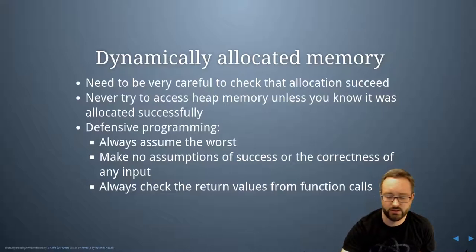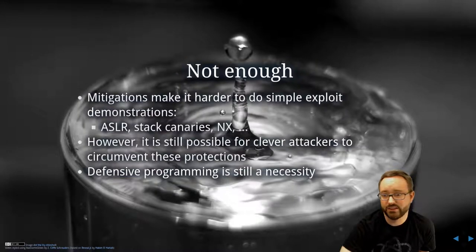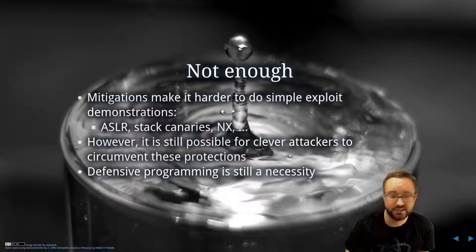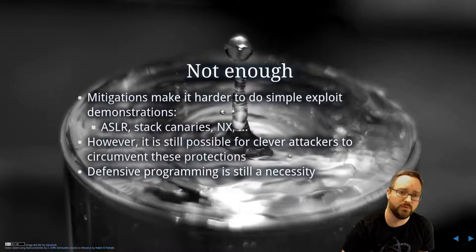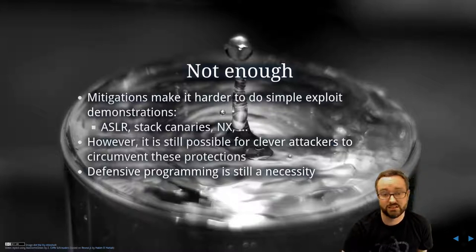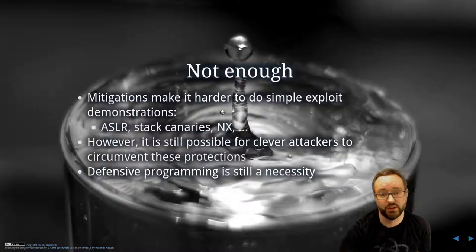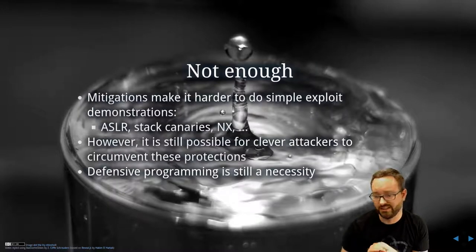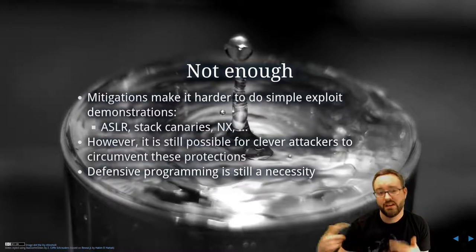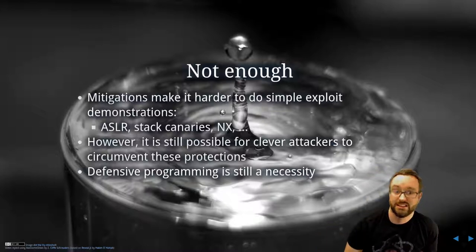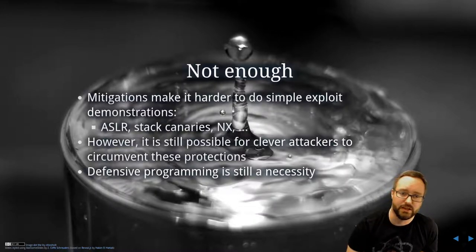There are mitigations built into the operating system kernel that make exploitation more difficult. These include Address Space Layout Randomization (ASLR), stack canaries which try to detect buffer overflows onto the stack, and non-executable stacks and memory regions. We'll cover these technologies in separate videos. When starting out learning about buffer overflows, we turn a lot of these mitigations off because it's easier to understand the concepts without them, and then we can turn them on and learn how attackers can still succeed in causing buffer overflows even in their presence.